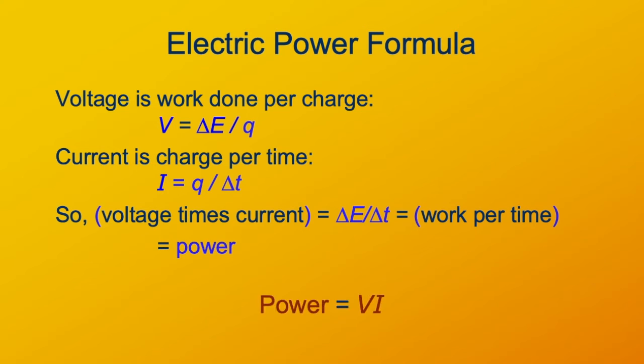So electrical power is voltage times current, and that's the power dissipated as heat in a resistor.